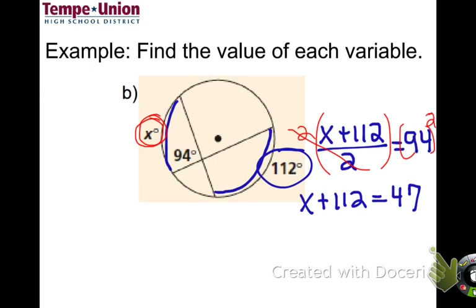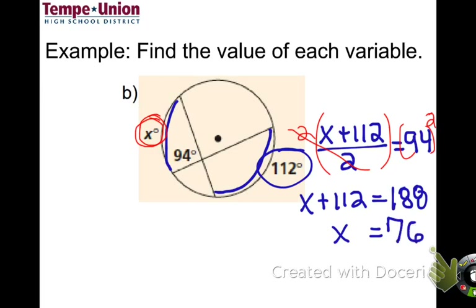I made an error — 94 times 2 is 188, not 47. So x + 112 = 188, which means x = 188 minus 112, so x equals 76. It's okay to make mistakes — you can see Mr. Ray is very human.